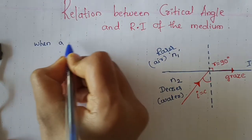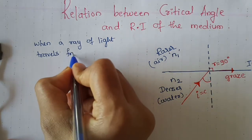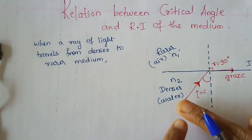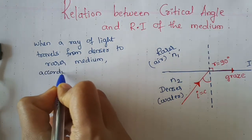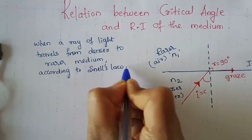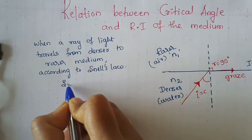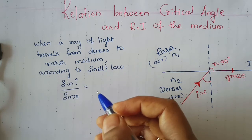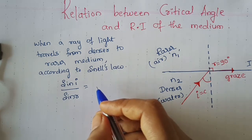When a ray of light travels from the denser to the rarer medium, we apply Snell's law. According to Snell's law, sin i divided by sin r is equal to a constant. That constant can be written in terms of refractive index of the medium, as we studied in a previous video on the laws of refraction.